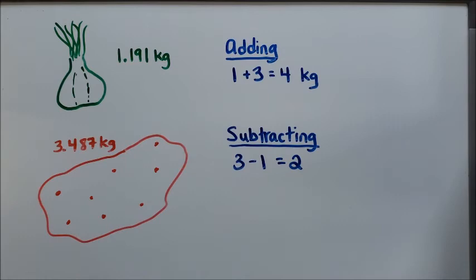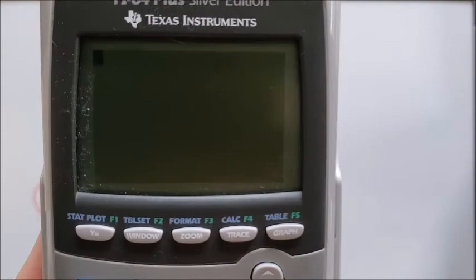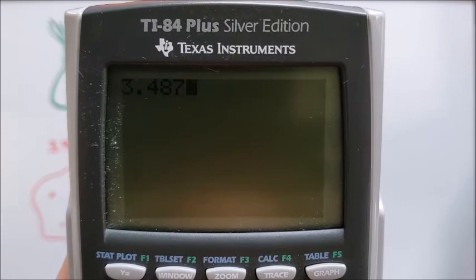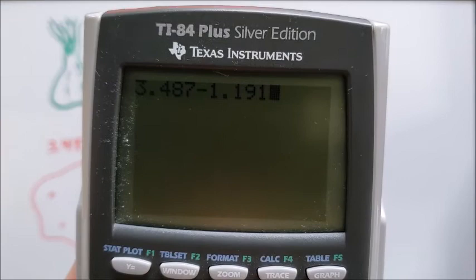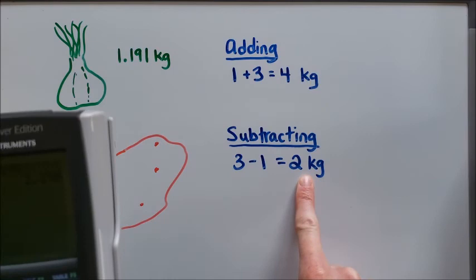So the difference should be about 2 kilograms. Let's pull out our calculator and we have 3.487 minus 1.191 equals 2.296. So we are pretty close to 2 kilograms.